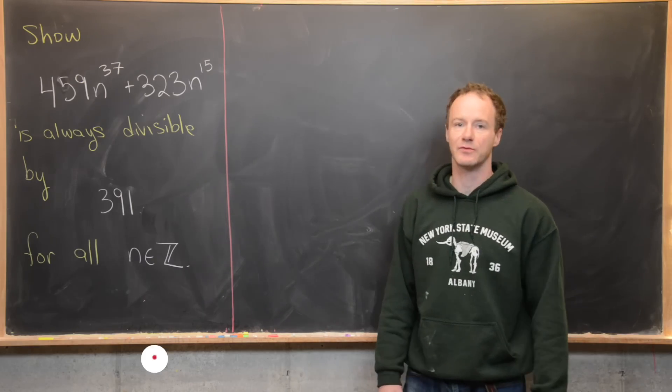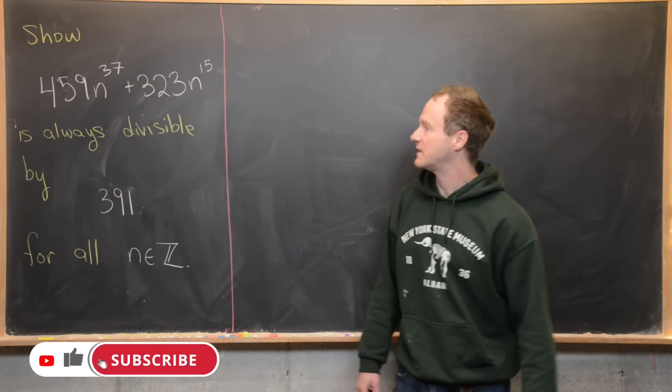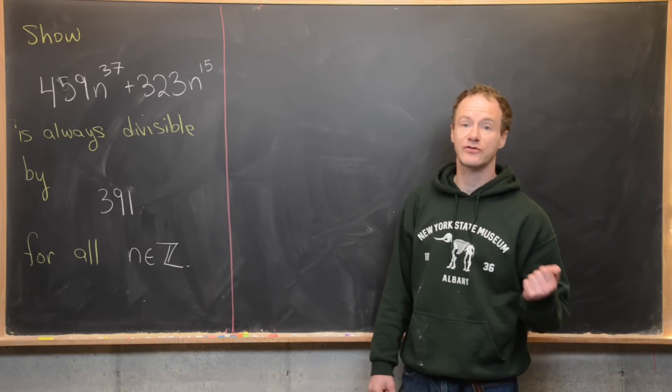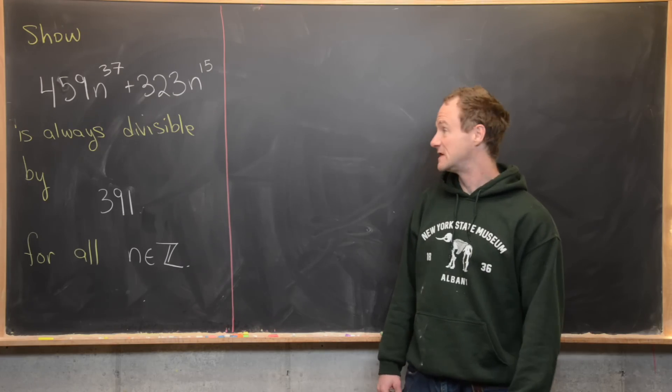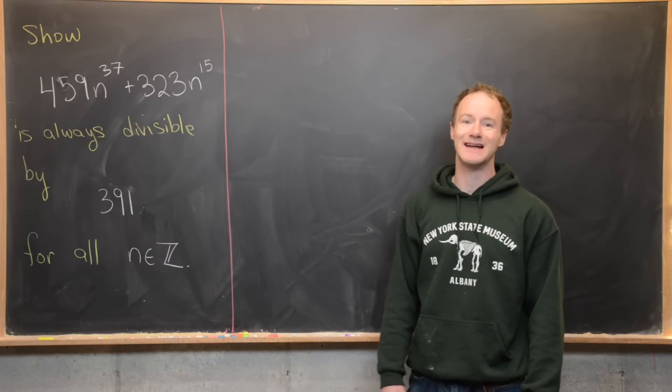Here we're going to look at a nice and quick elementary number theory problem. Our goal is to prove that 459 times n to the 37 plus 323 times n to the 15 is always divisible by 391.